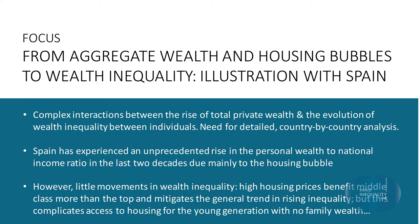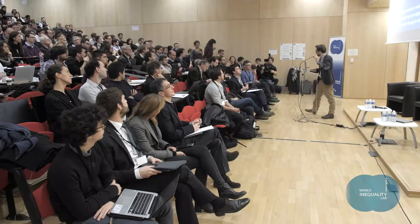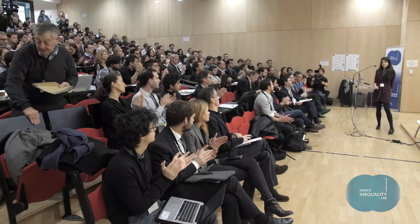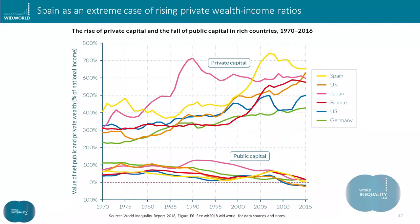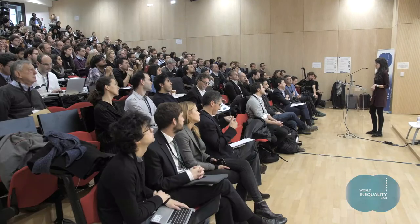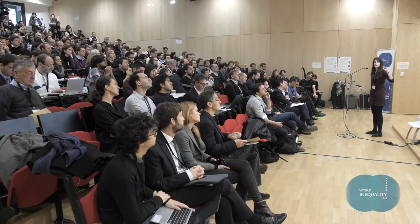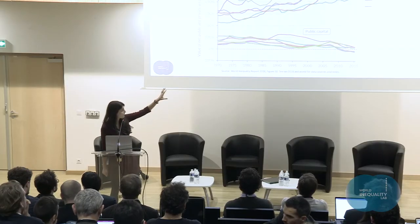Clara Martinez Toledano is now going to present the complexity of the links between private wealth accumulation and the concentration of wealth. As Luca introduced, the interactions between the rise in private wealth and wealth inequality are quite complex. Spain is a very interesting case to illustrate this fact, since the private wealth to national income ratio has dramatically increased in the last two decades. It started at around 400% in the 70s and 80s, but with the beginning of the housing bubble at the end of the 90s, it rose dramatically, reaching a peak of 700% in 2007. After the burst of the bubble in 2007, it decreased, but it is still at a much higher level — around 650% — than where Spain was in the 80s and 70s.